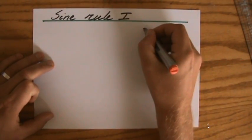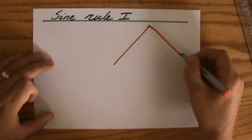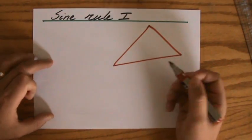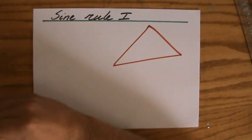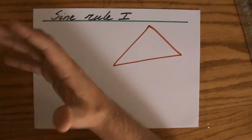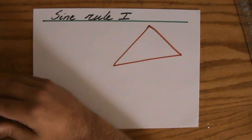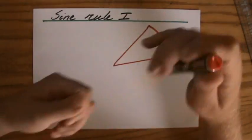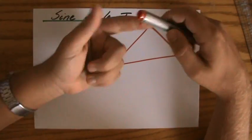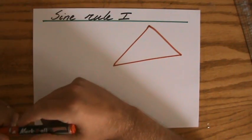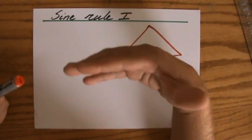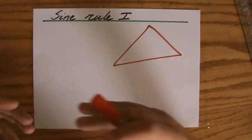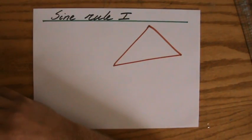But what now if we have a triangle that is not a right-angled triangle? For instance, this triangle. So far, we would have said, well, we can't use trigonometry because we need right-angled triangles to do so. But actually, we have two rules, the sine rule and the cosine rule, that allow us to use trigonometry anyway to calculate lengths and angles in triangles which are not right-angled triangles.